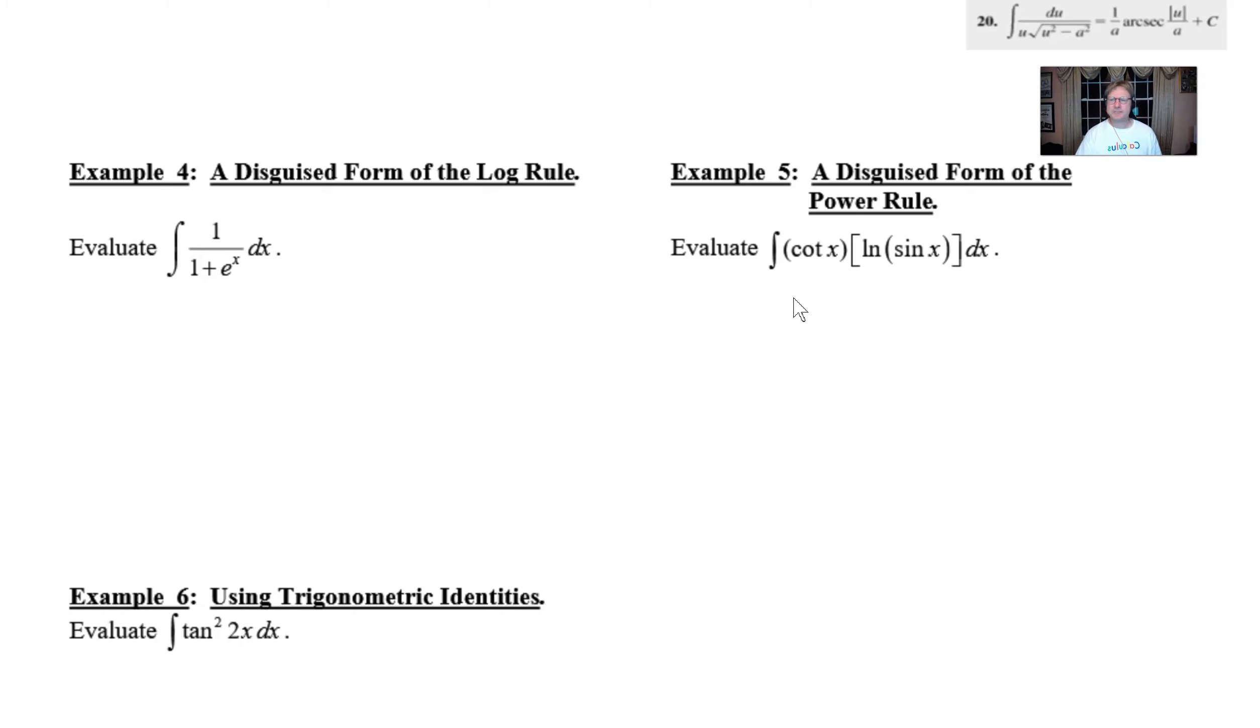Maybe u is going to equal the cotangent of x, but I don't think that's a good idea because I don't see how that can produce something with a natural log in it. Maybe we could let u be the natural log of sine of x and hope that this might produce some kind of a cotangent. So that's what we're going to do—we're going to let u be this natural log of the sine.